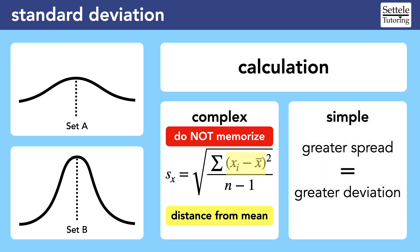A simpler way to calculate standard deviation for the SAT is to think about the spread of the data points. The greater the spread, the greater the standard deviation. For the examples on the left, the dotted line represents the mean. Notice that the curved line representing the data values is wider on the top for set A. Since it's more spread out, set A has a higher standard deviation.